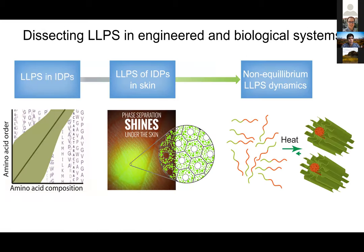Here is an outline of my talk. I'll begin with discussing our efforts to learn how to encode phase separation in intrinsically disordered proteins, called IDPs. Then I'll move on to how that work enables our ability to develop exquisite ways to examine these behaviors in tissues, particularly in the context of skin. I'll finish with what I think will become a frontier for the field — understanding not just the equilibrium processes that underlie phase separation, but perhaps more excitingly, the non-equilibrium aspects of this process.